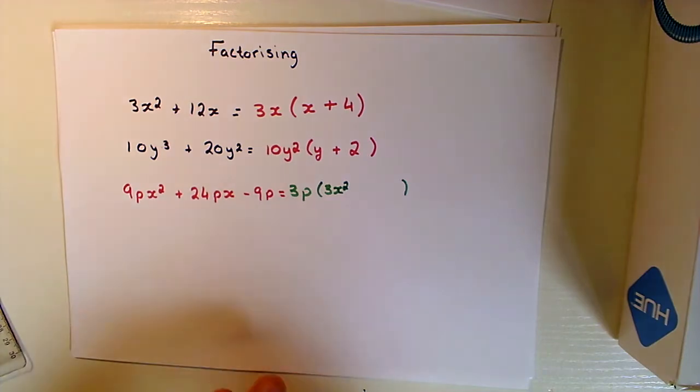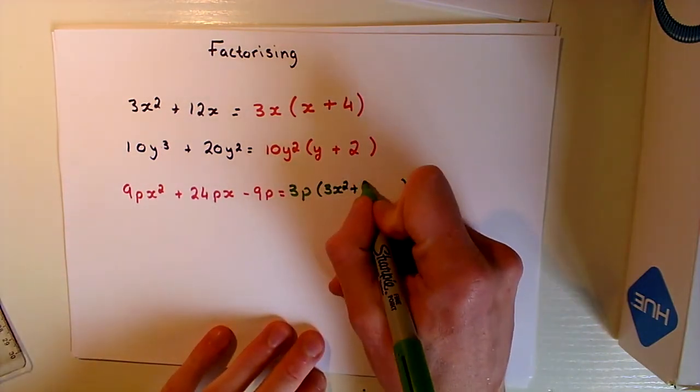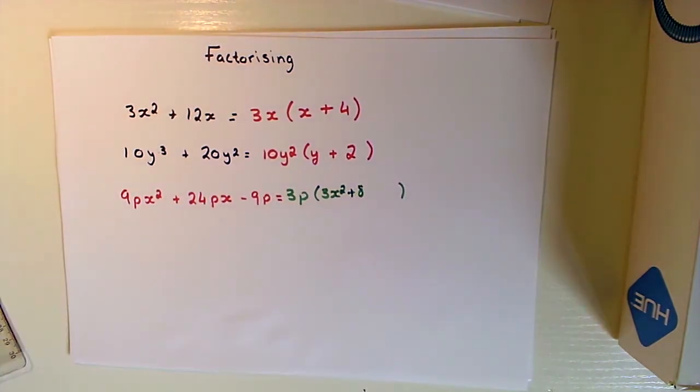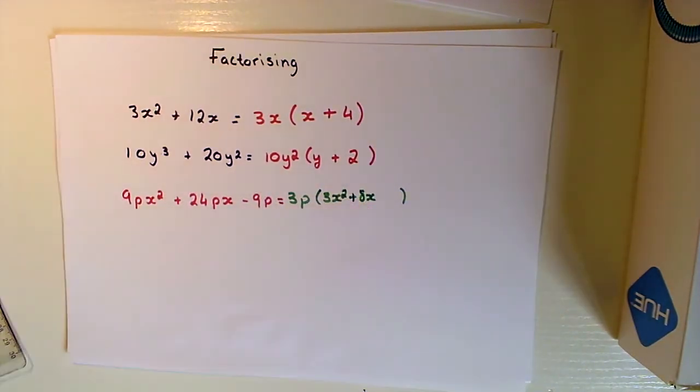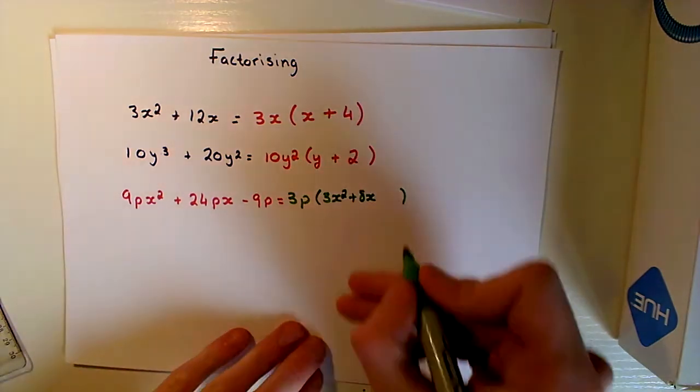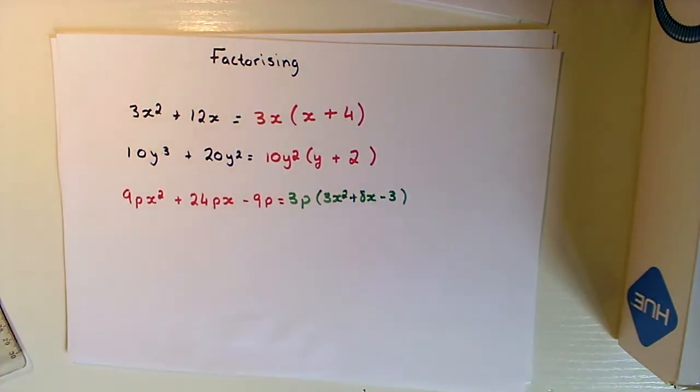Let's do the exact same thing now for our middle value of 24PX. I've withdrawn a 3P, so 3 goes into 24 eight times, and that will be 8X because 3P times 8X would give me my 24PX. Then finally, 3P will go into minus 9P minus 3 times. That is that example factorized. We've taken out what's common and our expression inside of the brackets should appear to be significantly simpler than what we were initially presented with.